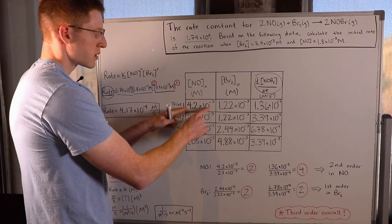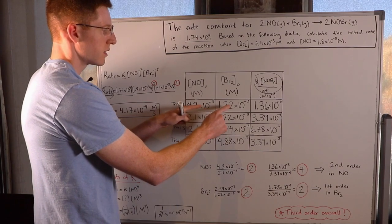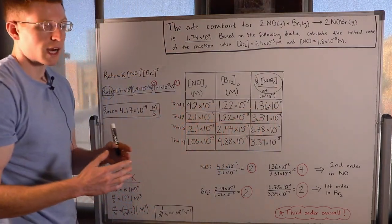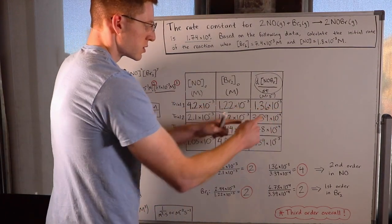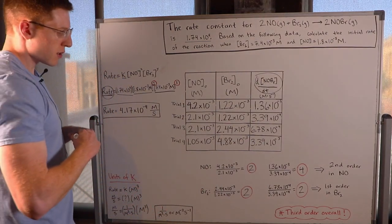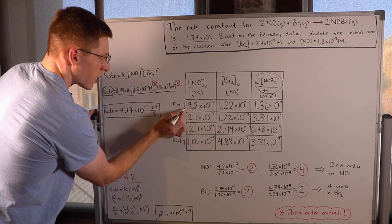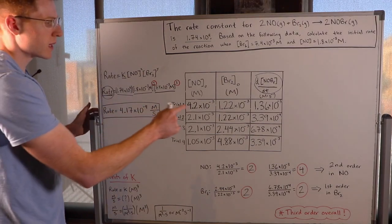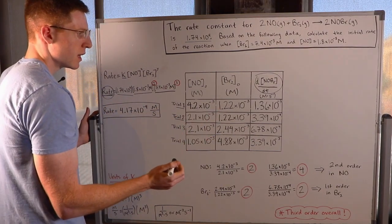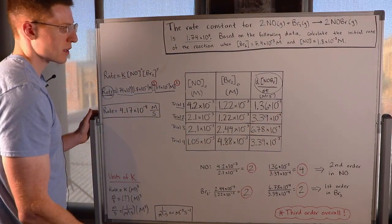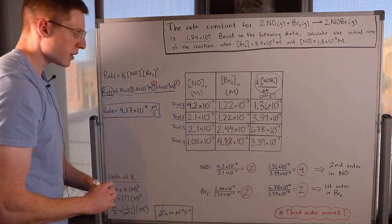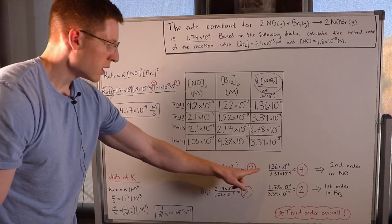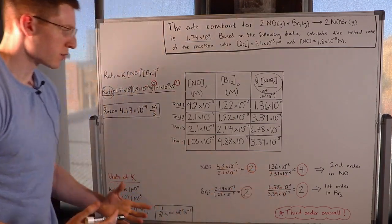When the initial concentration of NO was 4.2 times 10 to the negative 3 and the initial concentration of Br2 was 1.22 times 10 to the negative 3, that produced a certain overall rate. From trial 2 to trial 1, we actually doubled the initial concentration of NO while leaving the concentration of Br2 constant. And when we doubled it, we can see the overall rate of the reaction quadrupled.